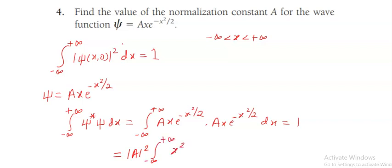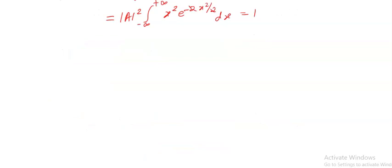This can be written as mod A square, integration from minus infinity to plus infinity, x square e to the power minus x square dx, equal to 1. So here we can cancel the 2 in the exponents. Let me write it again: A square integration from minus infinity to plus infinity x square e to the power minus x square dx is equal to 1.